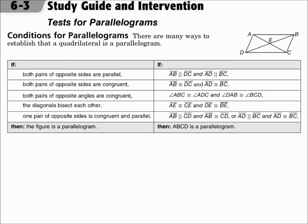Instead of saying if it's a parallelogram then opposite sides are parallel, we're instead saying if both pairs of opposite sides are parallel, then it's a parallelogram. So you're saying the converse of these statements. If any of these situations is true, then it's a parallelogram: both pairs of opposite sides are parallel, both pairs of opposite sides are congruent, both pairs of opposite angles are congruent, the diagonals bisect each other, or one pair of opposite sides is congruent and parallel. You only need one of those situations to occur, and the shape is a parallelogram.